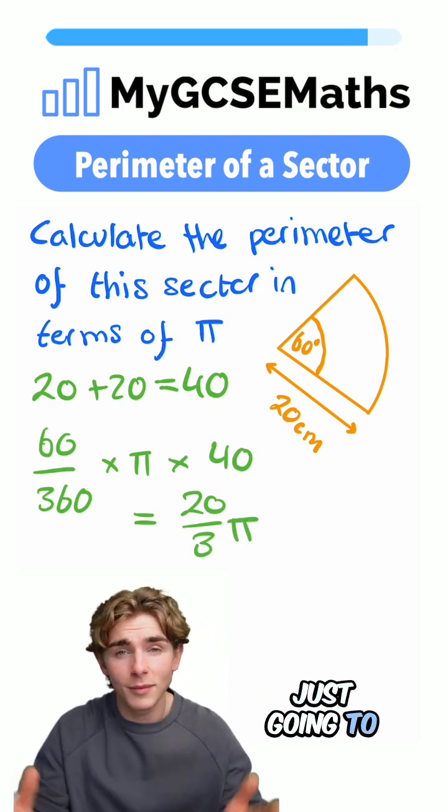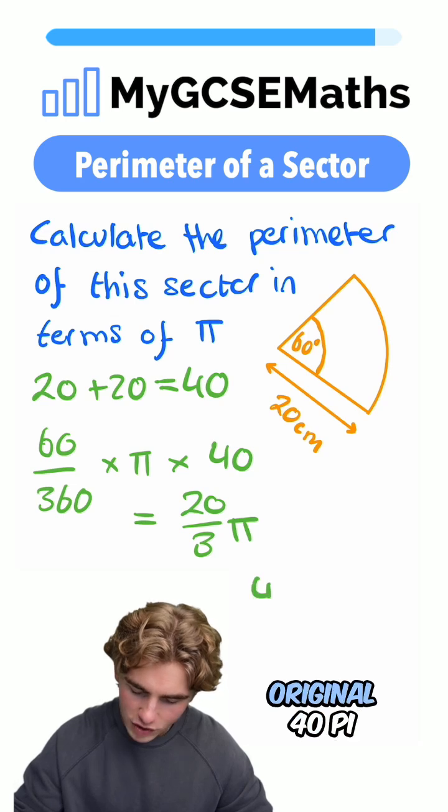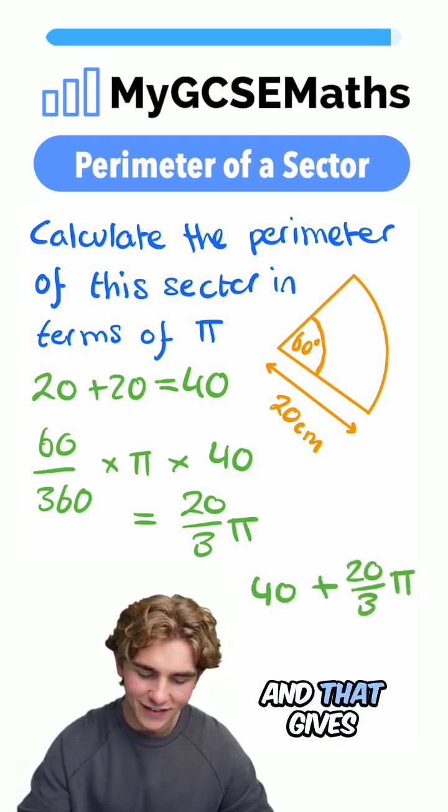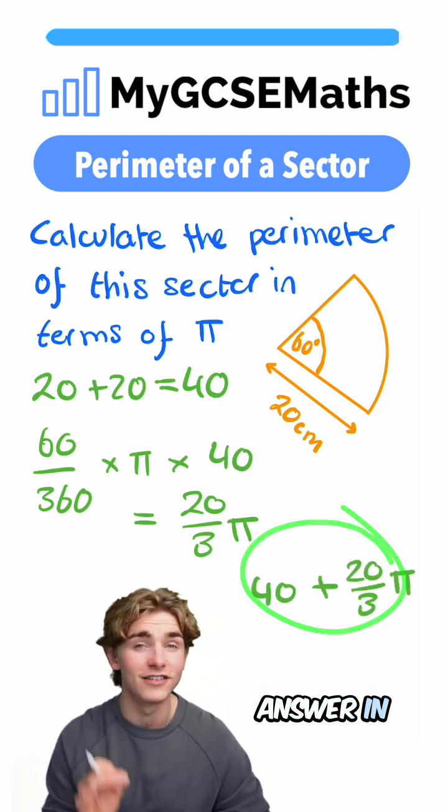Now, our final step is just going to be writing our answer. We have our original 40 plus our 20 over 3 pi, and that gives us our final answer in terms of pi.